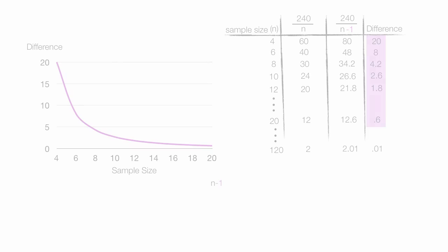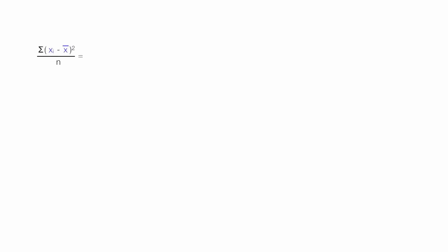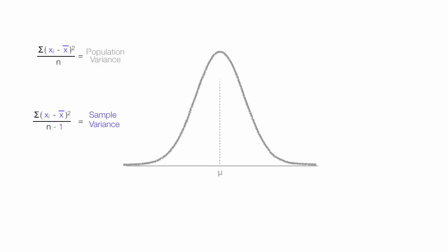The last thing I want to discuss is why we don't make this same adjustment for a population variance, but we make the adjustment for a sample variance. So let me draw the population bell curve with a population mean of mu, and I'll put in a sample the same size as the population. So the sample mean and the population mean are equal. Sample and population are the same. No error, no adjustment needed.